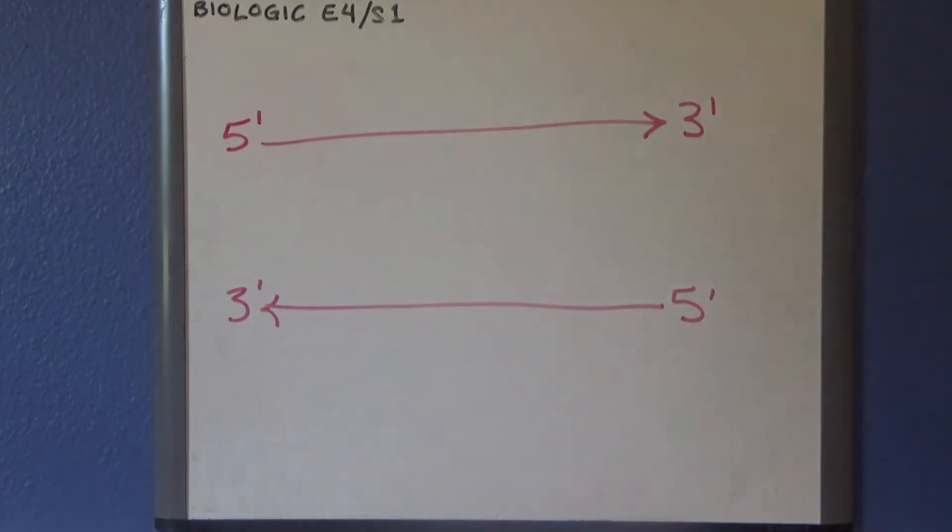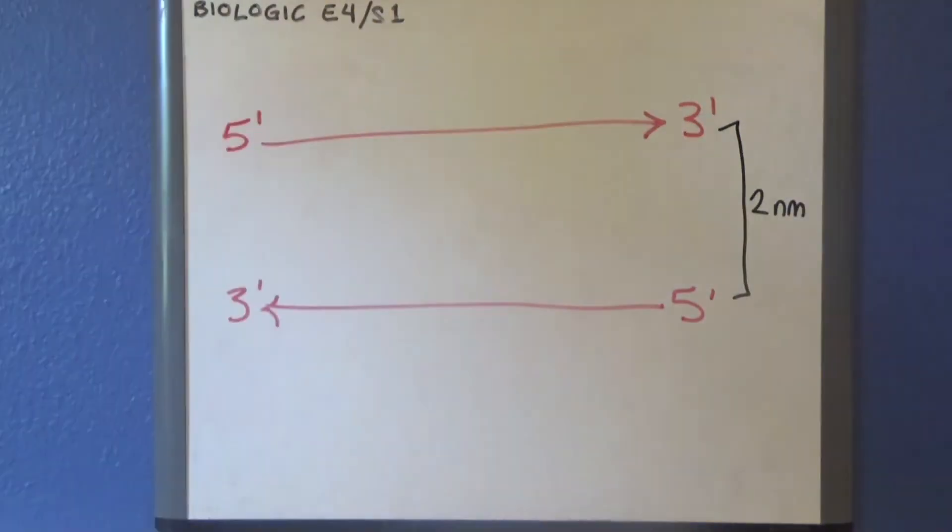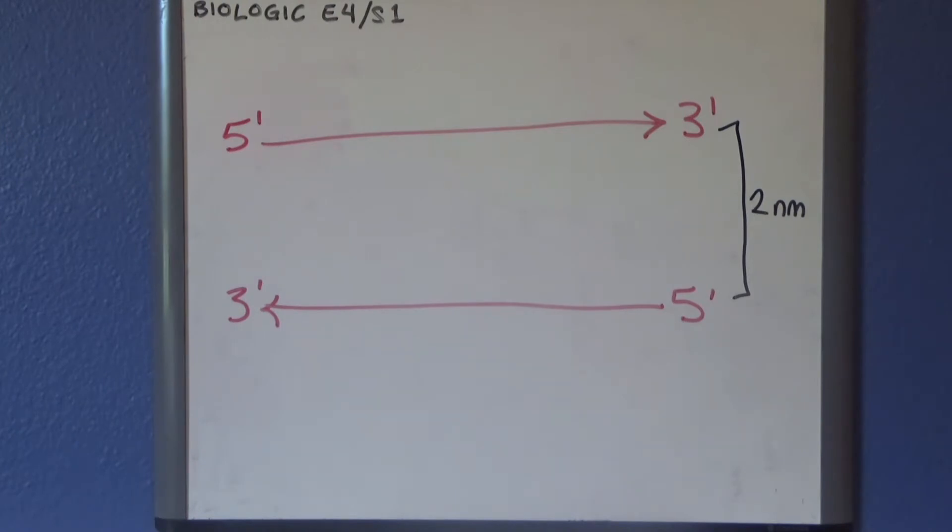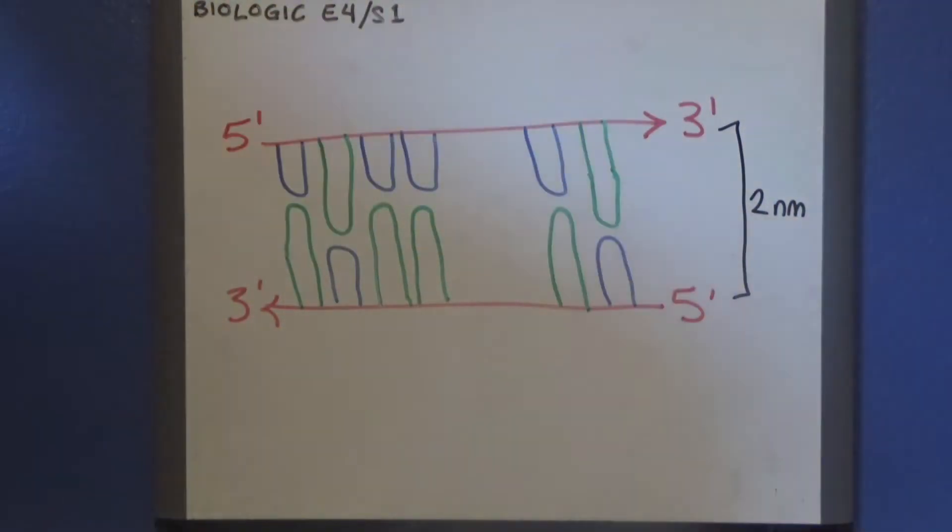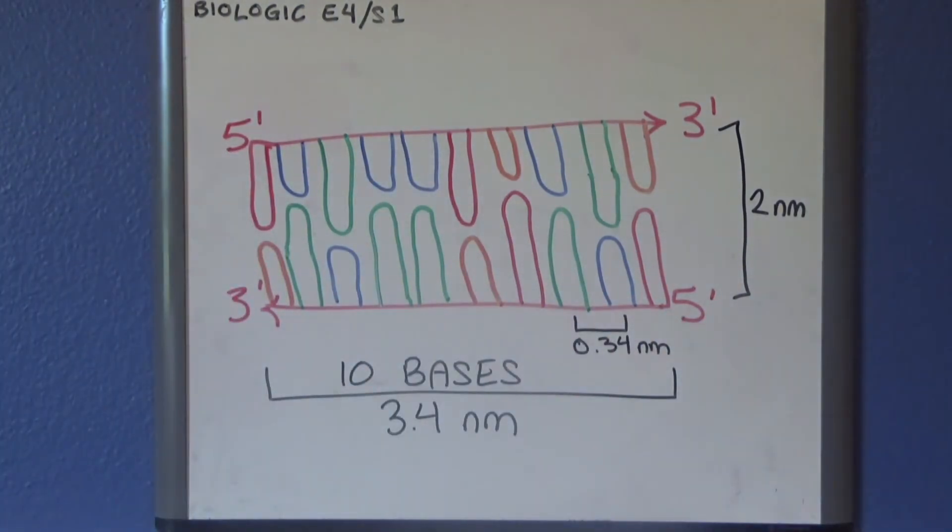Each double-stranded DNA molecule is about 2 nanometers wide, or two billionths of a meter. That's really small, like 100,000 times thinner than a human hair small. The distance between each nucleotide base is 0.34 nanometers. And what's pretty interesting is that every 10 bases, or every 3.4 nanometers, the DNA helix has one full rotation.